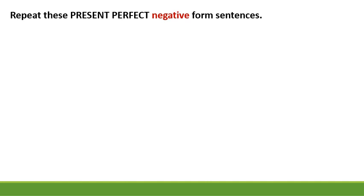Repeat these present perfect negative form sentences: 1. Jason and Tim have not been enthusiastic since 2 p.m. 2. Dana has not been in the library this year. 3. I have never been an inspiring person. 4. My father has not been hardworking today. 5. You have not usually been the best student.